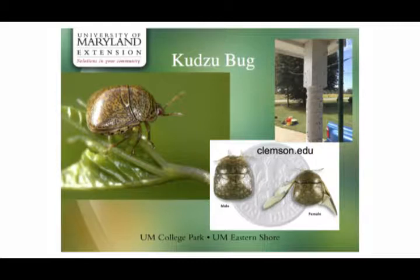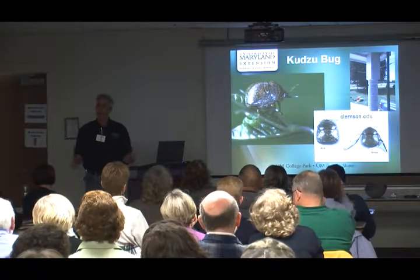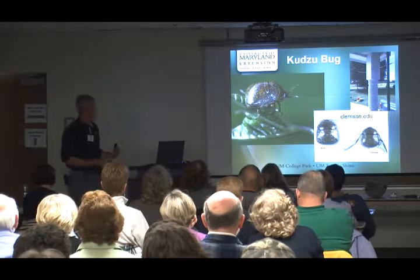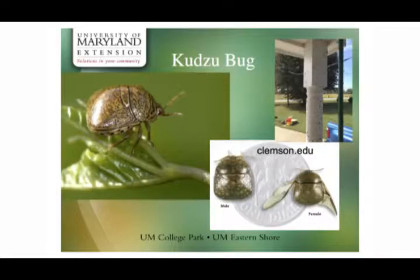Kudzu bug is related to the brown marmorated stink bug. Fortunately kudzu — a member of the bean family — is what it tends to feed on, though that's not great for soybean farmers. It first showed up in South Carolina and is quite bad there. As a homeowner, it has the same habit of making its way into your house, but it's much smaller than a brown marmorated stink bug so it can fit through smaller cracks.